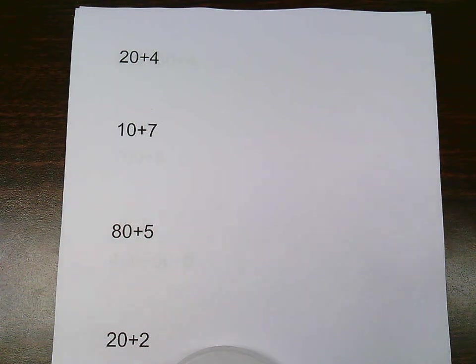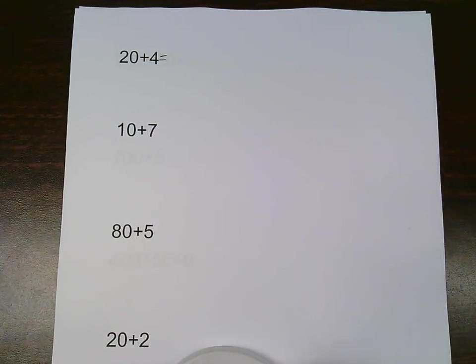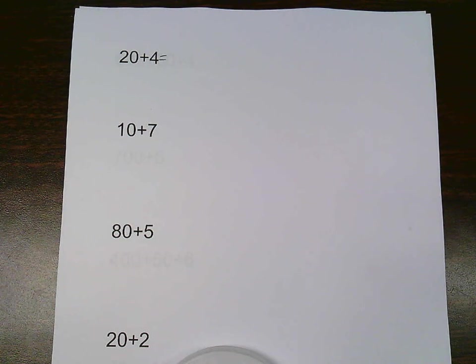We are going to work on changing expanded form numbers into standard form numbers. So right here I have the expanded form number 20 plus 4. To do that, I need to put them in vertical, I need to line them up vertically in order to add them.